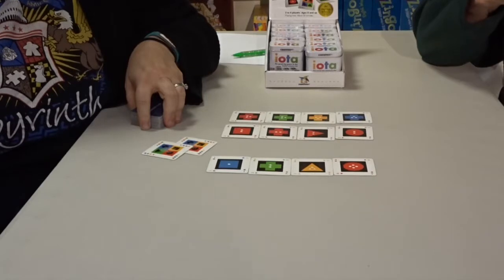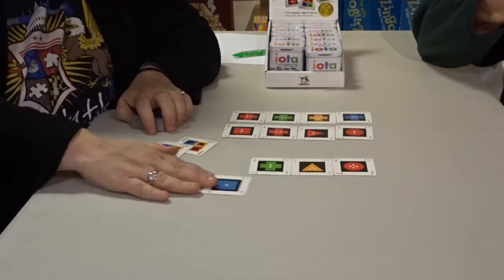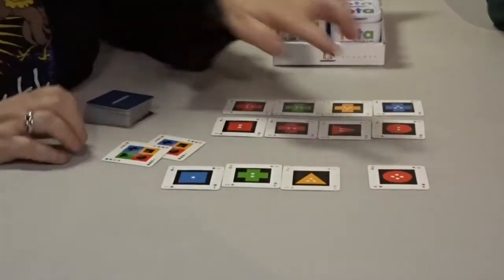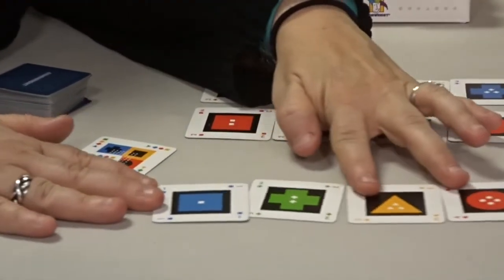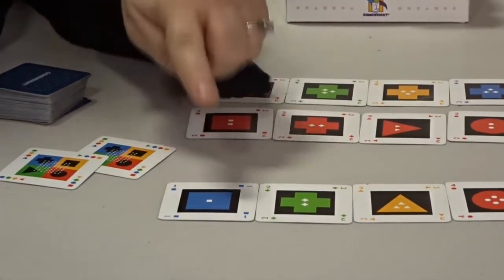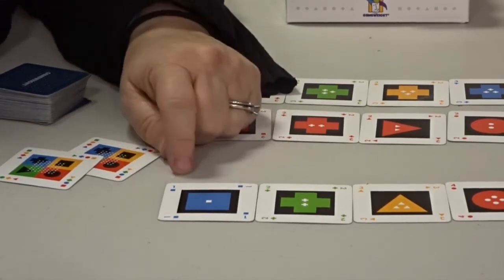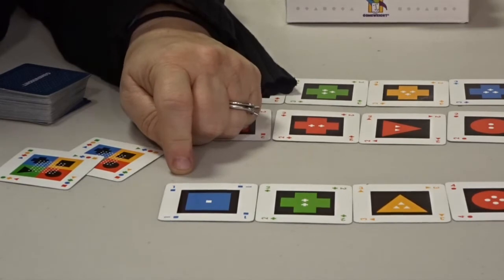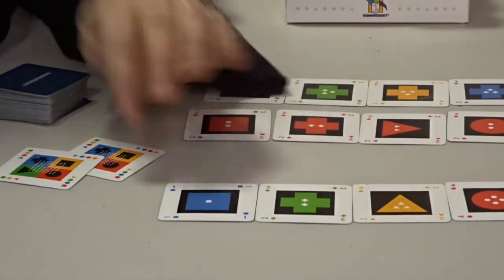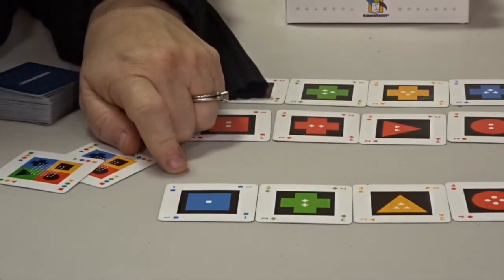We decided to teach you how to play it because the rules can be a little tricky when first getting started. Iota is a game where you make lines with 1, 2, 3 or 4 cards. These lines are made up of cards that have unique characteristics - they have numbers, colors and shapes.